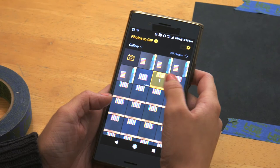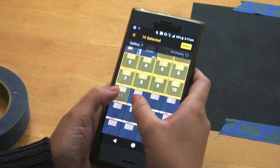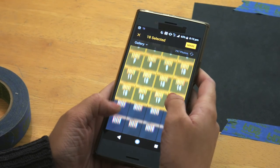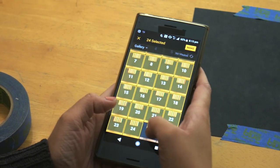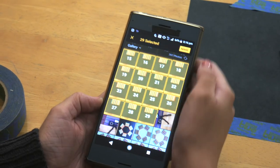When you get to the app, you're going to want to start to select all the images that you want to put into your stop motion animation. Hit make.